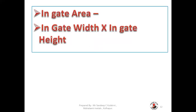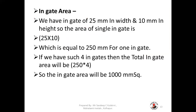Now we go to our last calculation, that is ingate area. How to calculate ingate area? The formula is very simple: ingate area = ingate width × ingate height. Let us take an example. We have an ingate of 25 mm in width and 10 mm in height. So the area of a single ingate is 25 × 10, that is 250 mm square for one ingate.